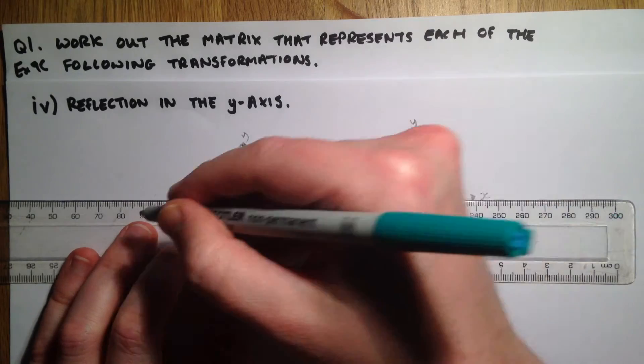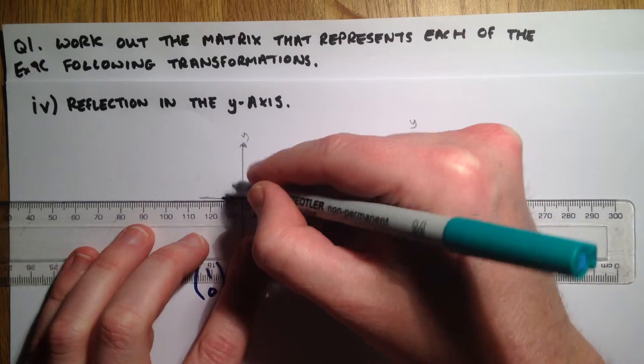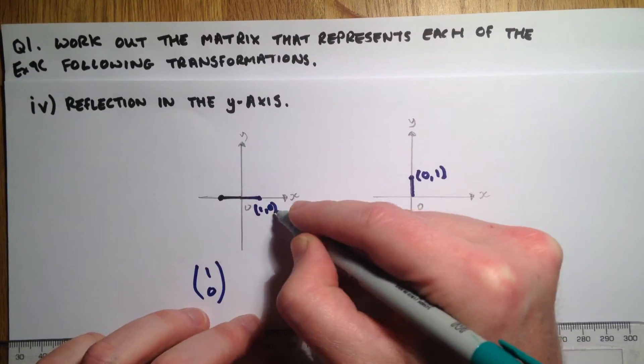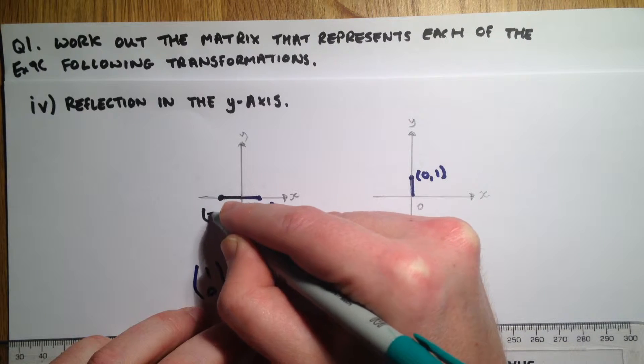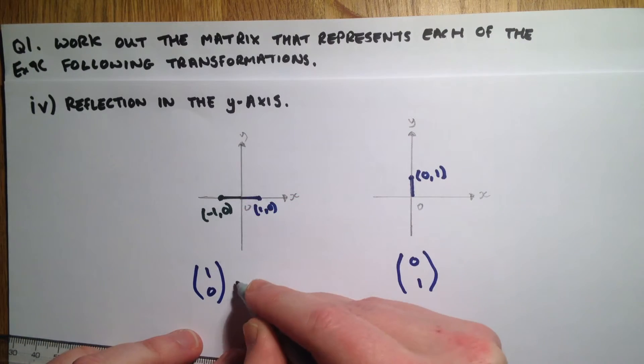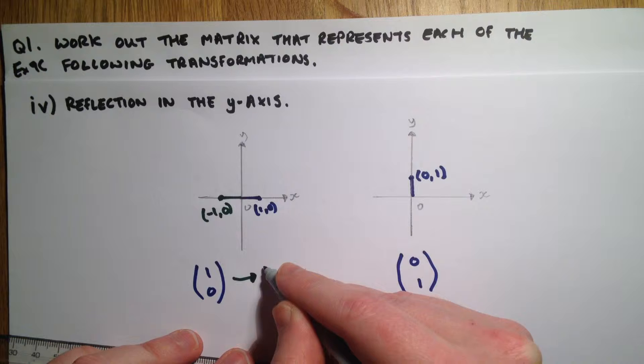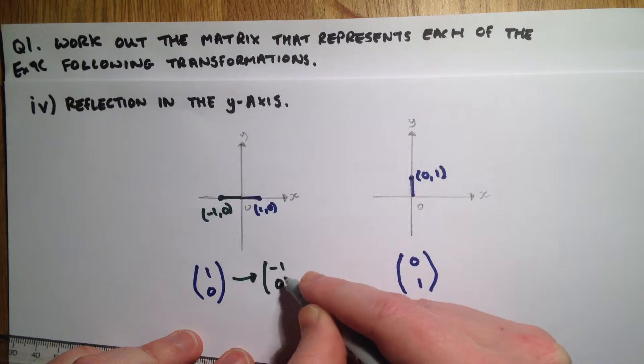You can picture this line flipping over to here. So rather than this being one zero, this becomes negative one zero. So this goes over to negative one zero.